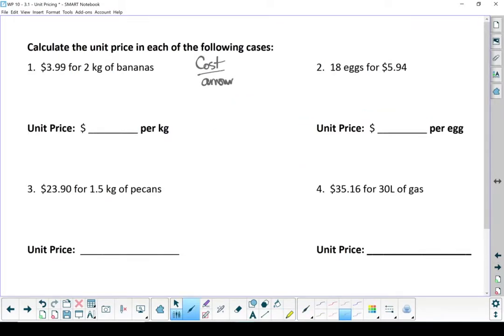Let's run through a few more. Keep in mind we're using the same formula for all of this. Cost over amount equals unit price. Let's solve a couple of questions.